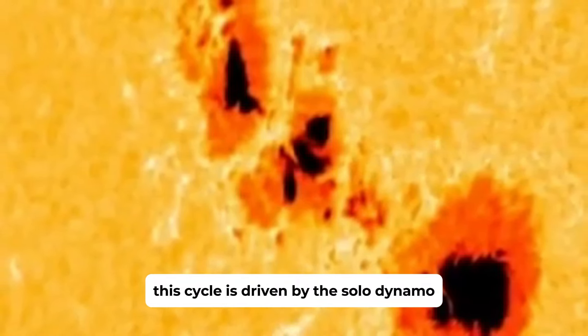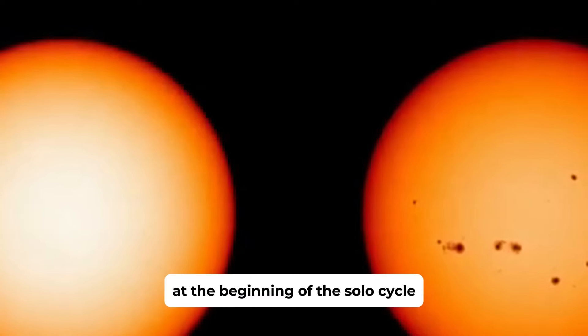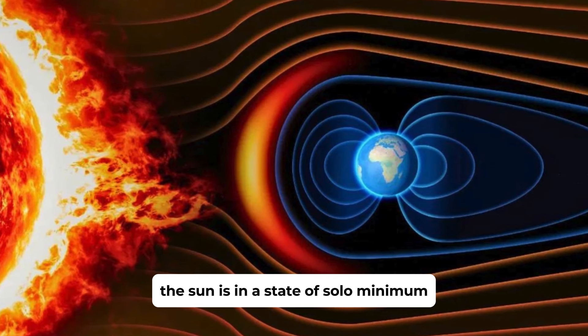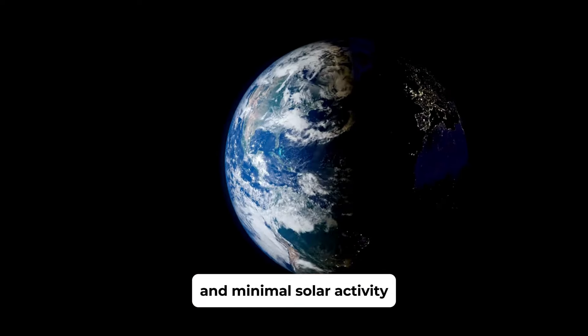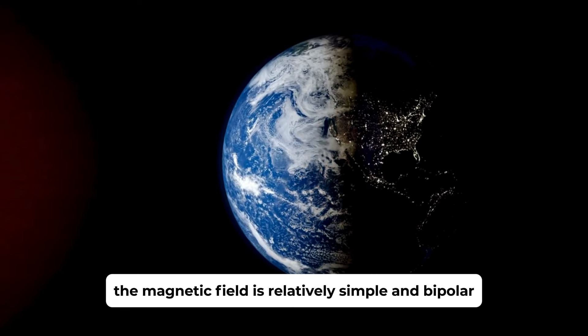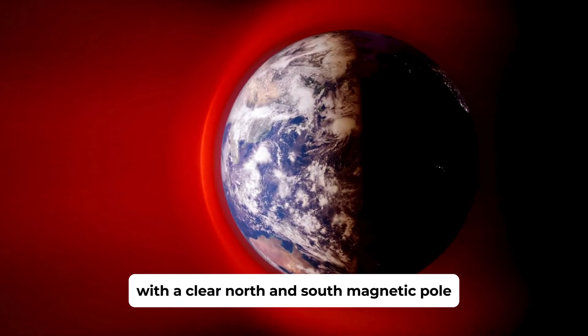This cycle is driven by the solar dynamo and involves several stages. At the beginning of the solar cycle, the Sun is in a state of solar minimum, characterized by a low number of sunspots and minimal solar activity. The magnetic field is relatively simple and bipolar, with a clear north and south magnetic pole.